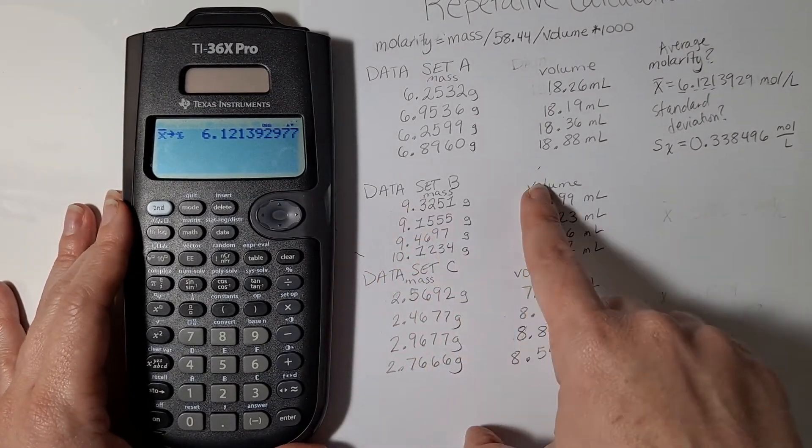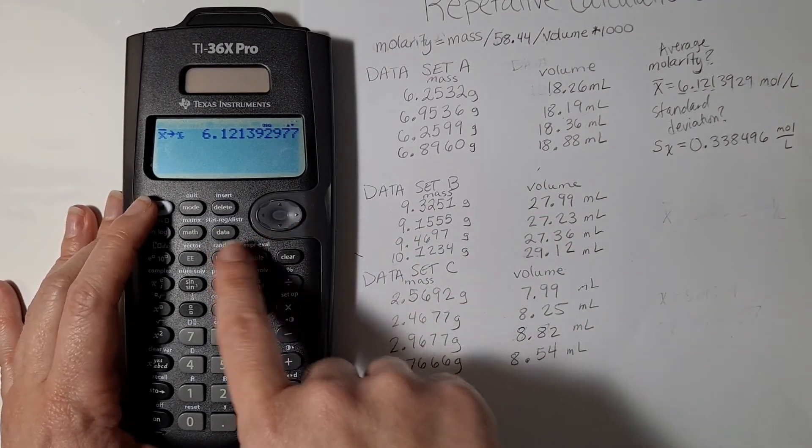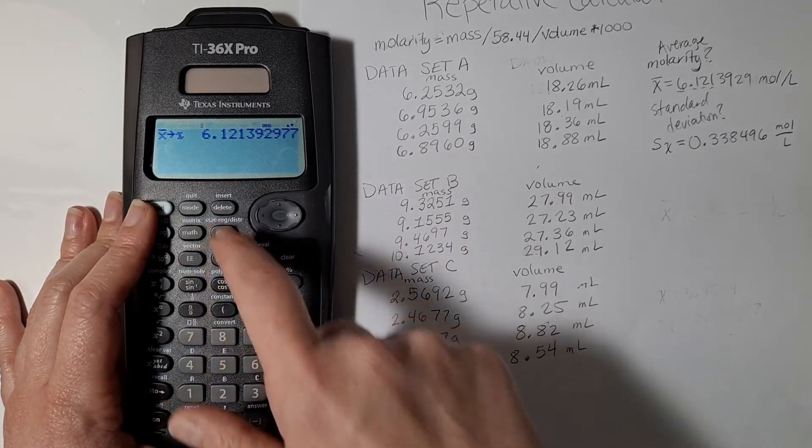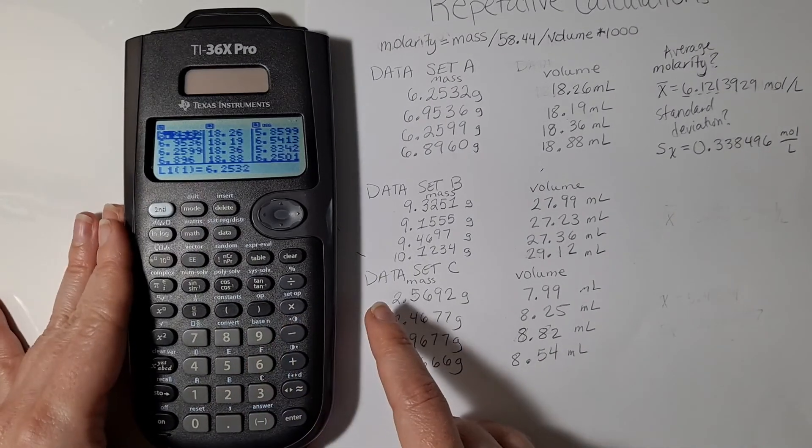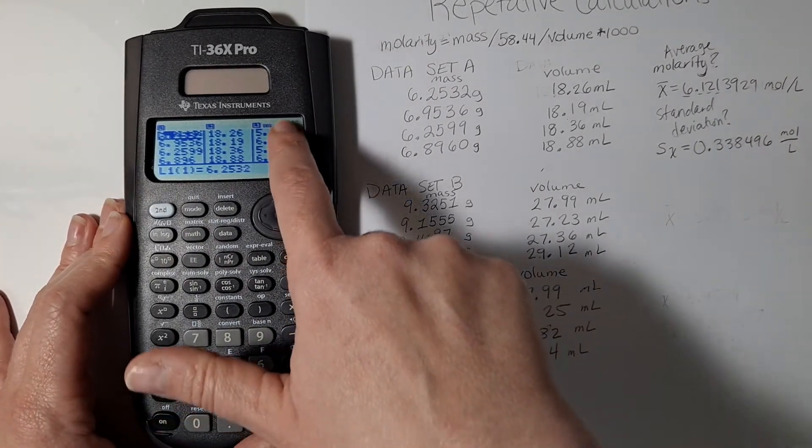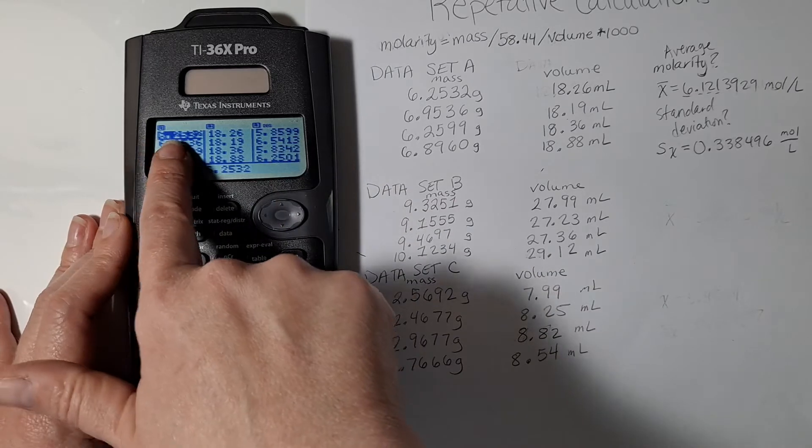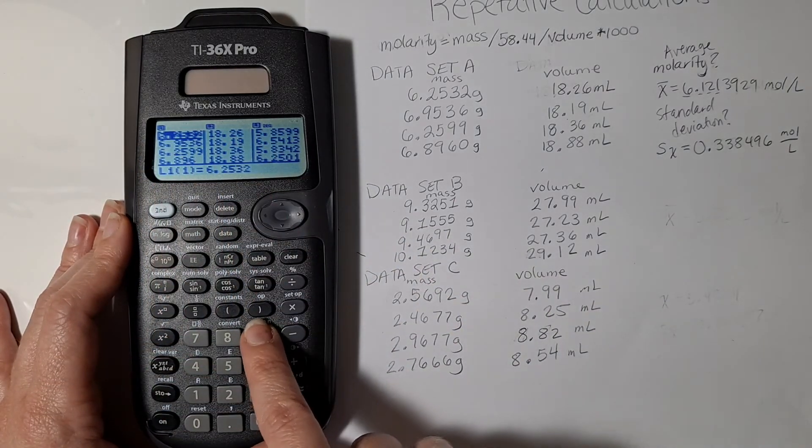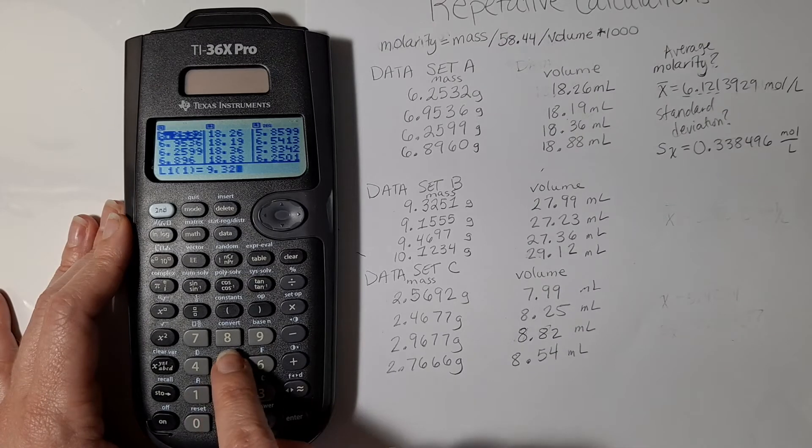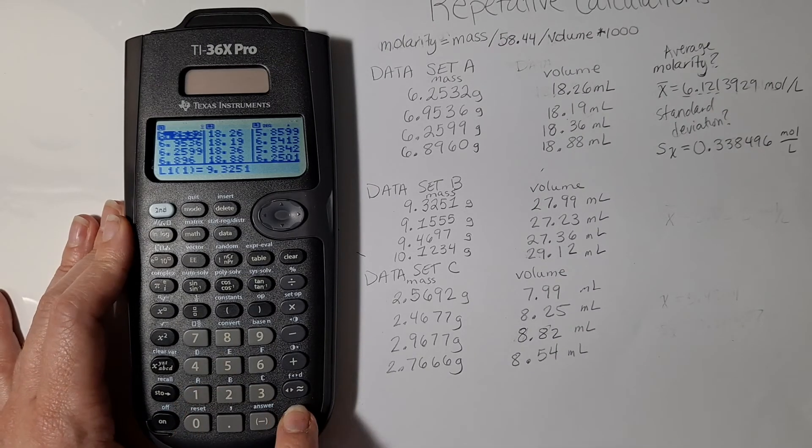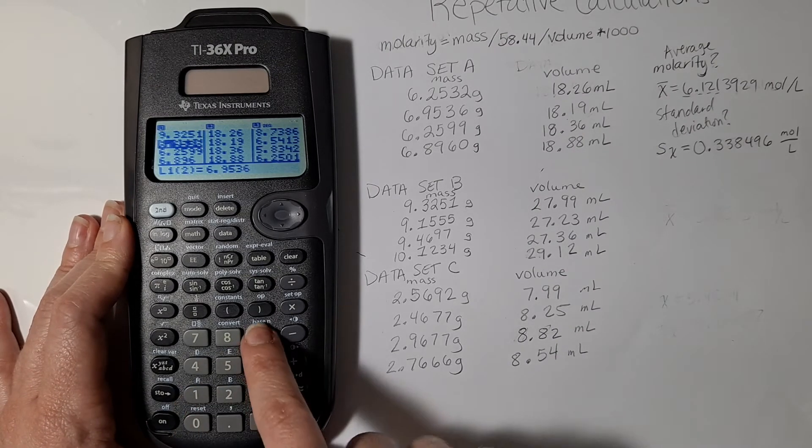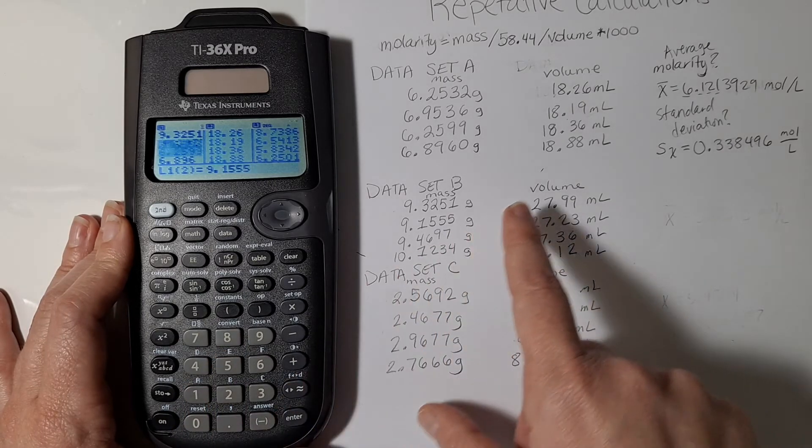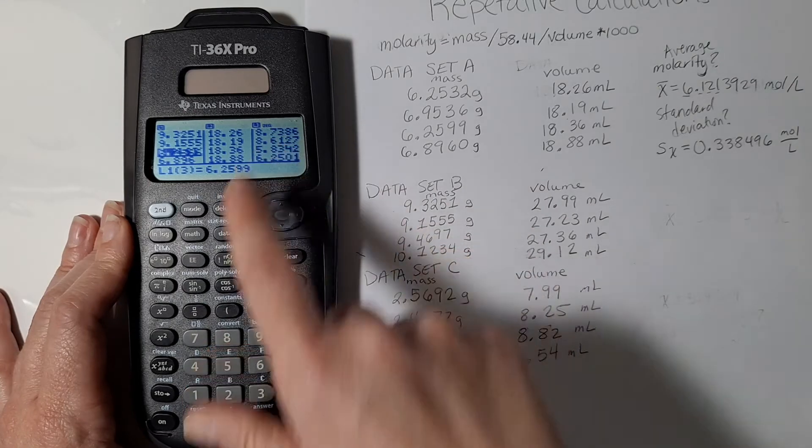I go back to the data tab and the formula for list three is the same, but my data for list one and list two has changed. All I have to do is type over my previous data and as I retype over my previous data, then it automatically recalculates.